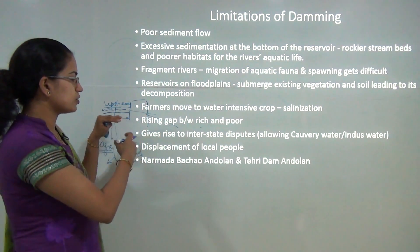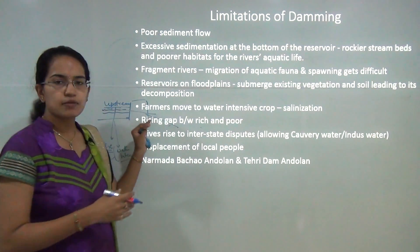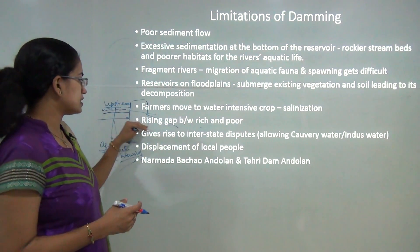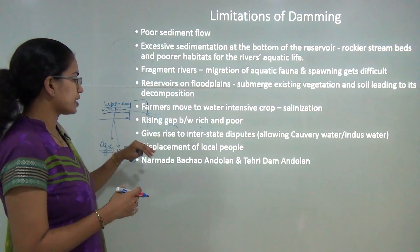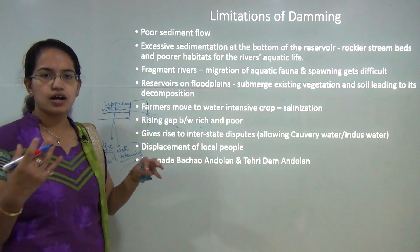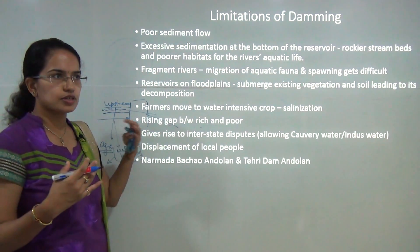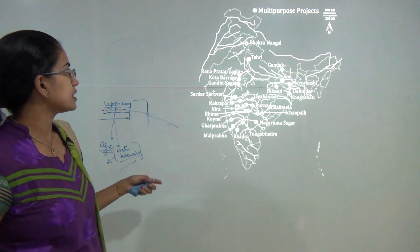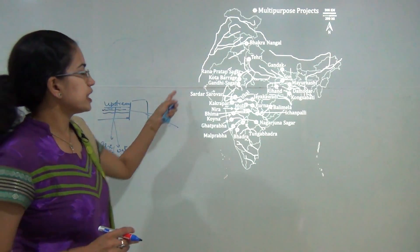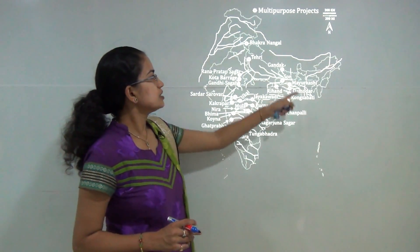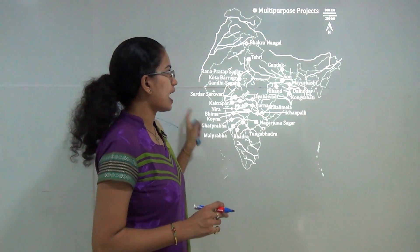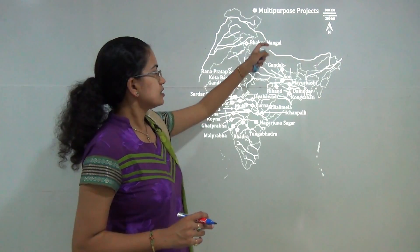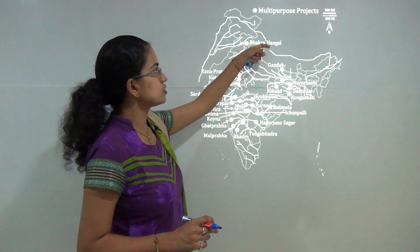Narmada Bachao Andolan and Tehri Dam Andolan are major examples of revolt from local people living in these areas. Here are some of the major dams of India that we will discuss.